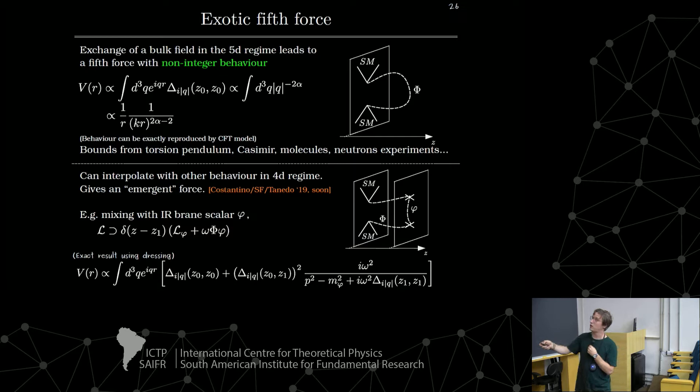There are a bunch of interesting signatures in this framework. Fifth forces, non-standard stellar cooling, periodic signal squiggles, soft spherical events, sometimes called soft bombs. And also aspects about dark phase transitions. For today, I'm going to discuss only about a few of these things. In the 5D regime, if your standard model fields exchange a bulk field, it generates a long distance, long range force between the nucleons.